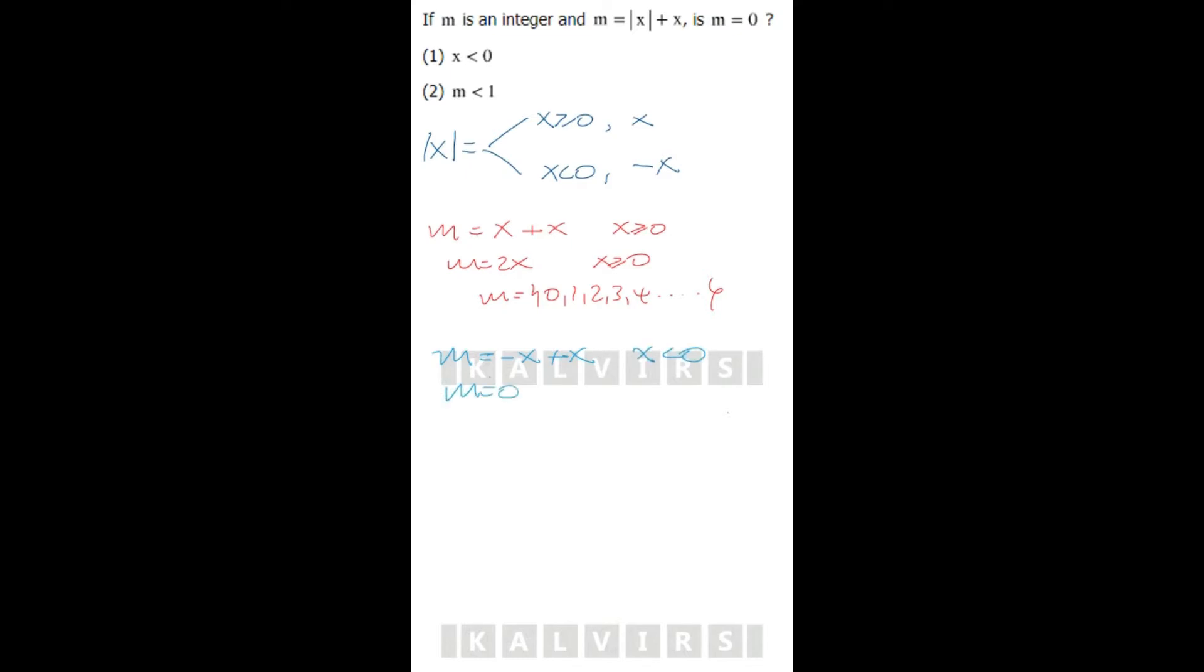If you join both cases, the possibilities for m are 0, 2, 3, 4, or thereafter. My question is: is m equal to 0? m equals 0 when x is negative, and m equals 0 when x is 0.